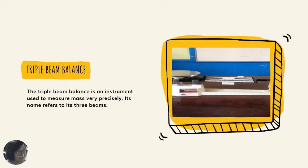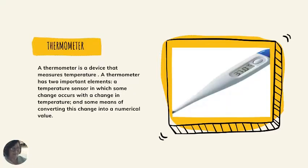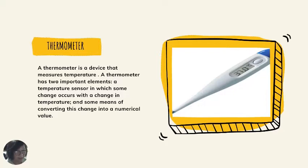Next: the triple beam balance. The triple beam balance is an instrument used to measure mass very precisely. Its name refers to its three beams. Next: a thermometer. A thermometer is a device that measures temperature. It has two important elements: a temperature sensor in which some change occurs with a change in temperature, and some means of converting this change into a numerical value.